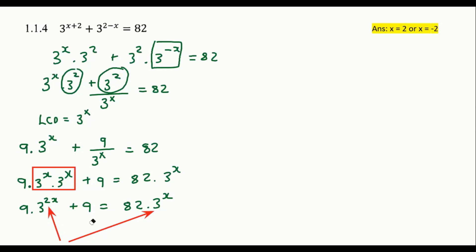So what I do then is I'm just going to rearrange this entire thing so that it looks more like a normal trinomial. So that's going to be nine times by three to the two X minus 82 times by three to the X plus nine equals zero.